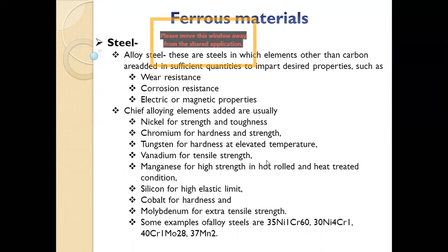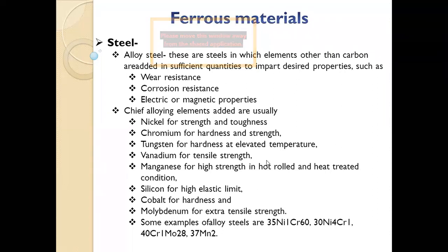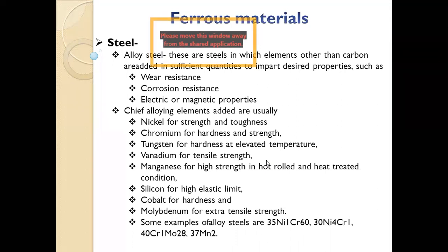Alloy steel is steel with different materials added to improve various properties. For example: nickel is added for more strength and toughness; chromium is added for hardness and strength retention at elevated temperatures — that means hardness remains constant as temperature increases, so tungsten is used for that.